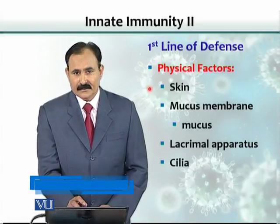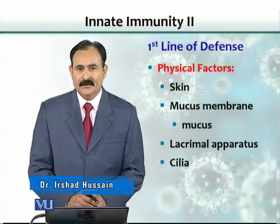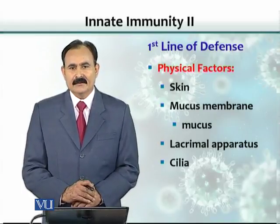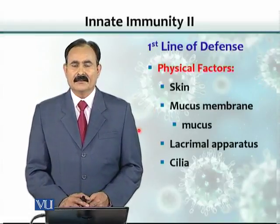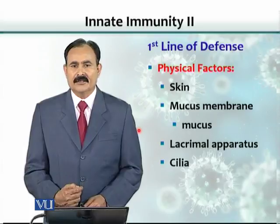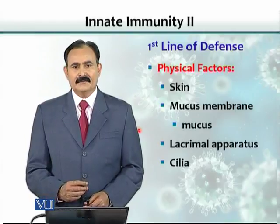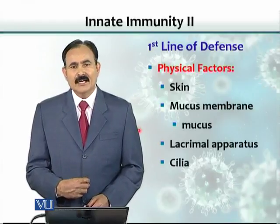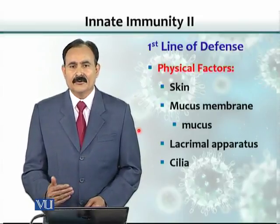The intact skin does not allow penetration of organisms. Only when the integrity of the skin is compromised can these organisms enter. Similarly, mucous membrane lining all our tubular organs like the respiratory system, GI tract, and urogenital tract — they are all lined by epithelial cells and also make a barrier. So organisms we take in with food do not readily enter the body because the mucous membrane acts as a barrier.